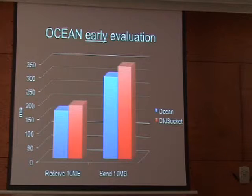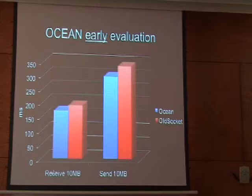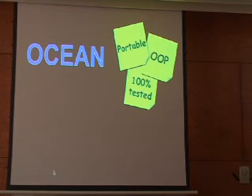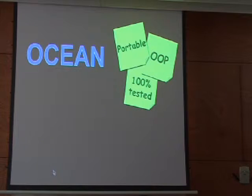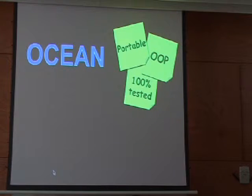Those are early evaluations, because we need to complete our tests and go to 100% coverage. But it's kind of encouraging that we are on a not-too-bad path. To conclude, within the Ocean project we want to have a portable library for networking, a well-designed library with good OOP using design patterns, and we want everything to be well-tested. The work is in progress and it looks like we are on the right side.